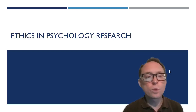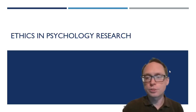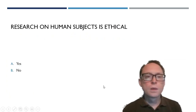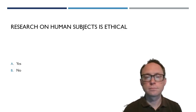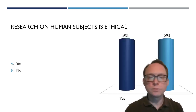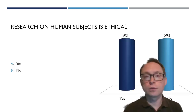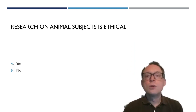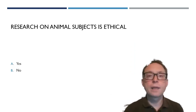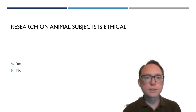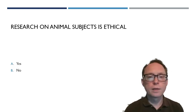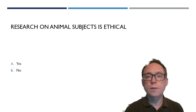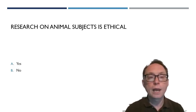Let's get some information about what you think about research in general. Let's start with this question: is research on human subjects ethical at all? Now answer this question: is research on animal subjects ethical? What we find is generally people say that research on animal subjects is less ethical — they're more likely to say no to that question than to the human subjects question. I'm not here to judge your specific morality. I'm trying to give you the background of where human subject and animal subject research policies come from and how they are implemented today.